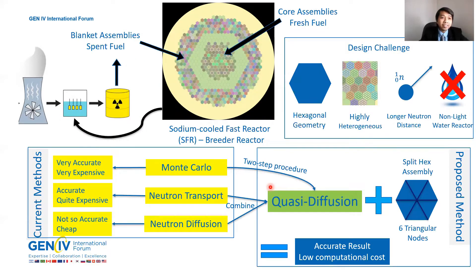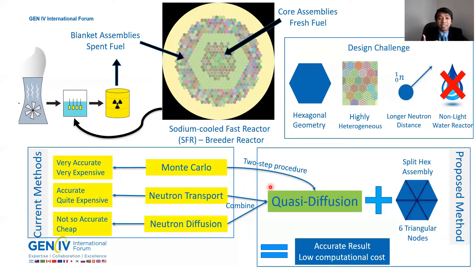What if I told you that there are kinds of nuclear reactors that can utilize nuclear waste or spent fuel into the reactor? One kind of this reactor is the sodium-cooled fast reactor that can also act as a breeder reactor. It means that this reactor can generate more fuels than it consumes, which is too good to be true.